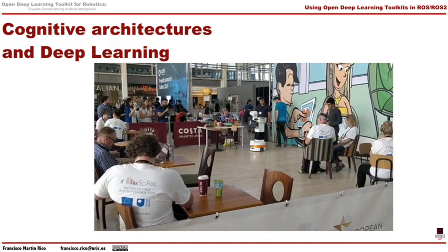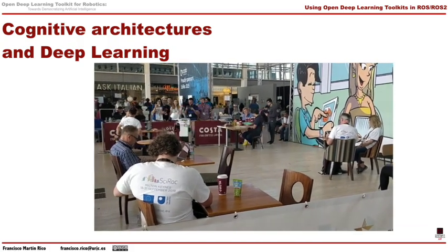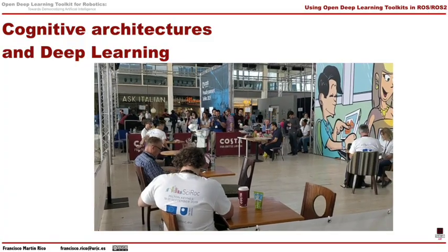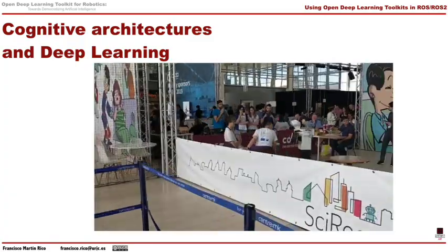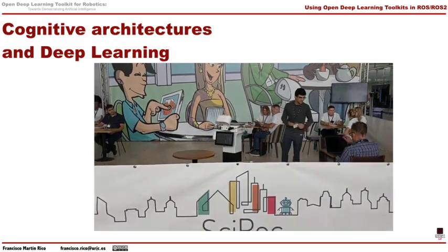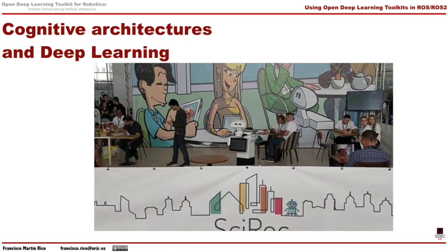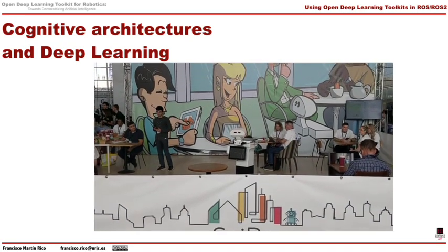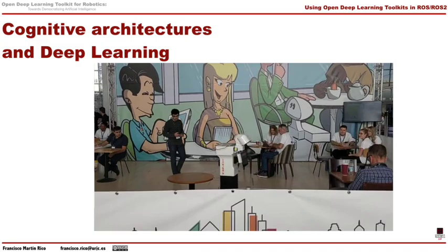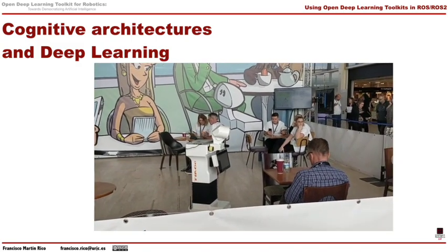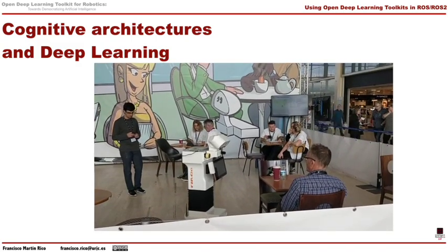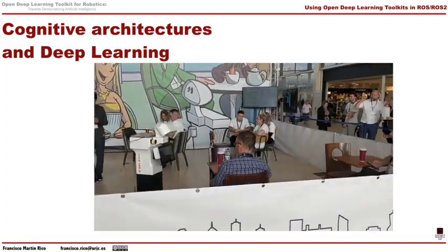In this video, we can see this software in action. The robot must detect the state of each table before getting an order from clients. We can see how navigation, attention, dialogue, and perception work together to achieve the goal of this test. The robot has a GPU on which we run the deep learning toolkit used to perceive.